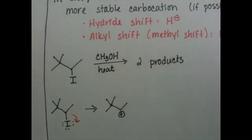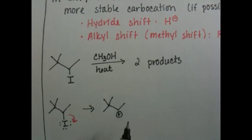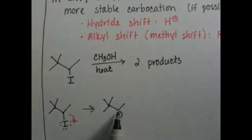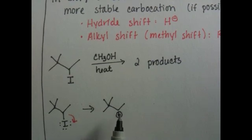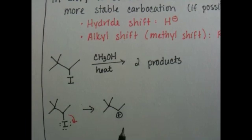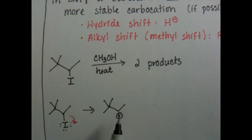So there's our carbocation. And whenever you're doing an SN1 mechanism and you make a secondary carbocation like we just did, you should always, the next thing that you should do is ask yourself, can I make this carbocation into a tertiary? Is it possible for me to move a hydride or an alkyl R- or a methyl, a CH3- to make this molecule more stable?